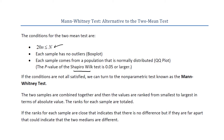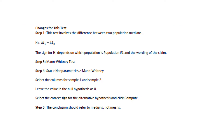If the conditions are not all satisfied, we can turn to the non-parametric test known as the Mann-Whitney test. The idea behind it is that the two samples are combined together, and then the values are ranked from smallest to largest in terms of absolute value. The ranks for each sample are totaled. If the ranks for each sample are close, that indicates there is no difference, but if they are far apart, that could indicate that the two medians for the populations are different. This is a test for medians rather than means, just like the sign test and the Wilcoxon signed-ranks test.